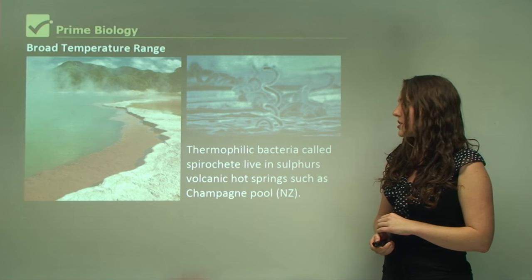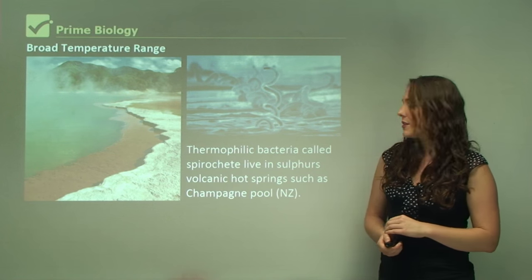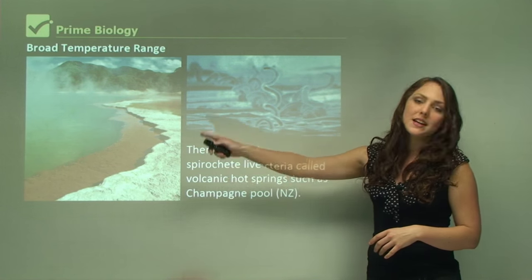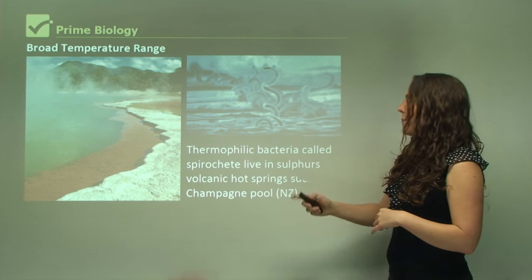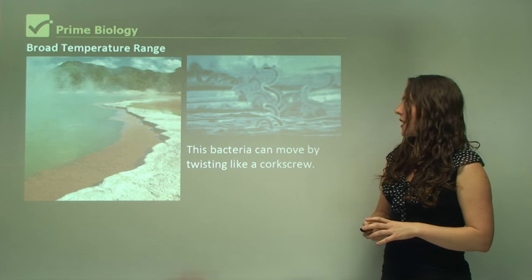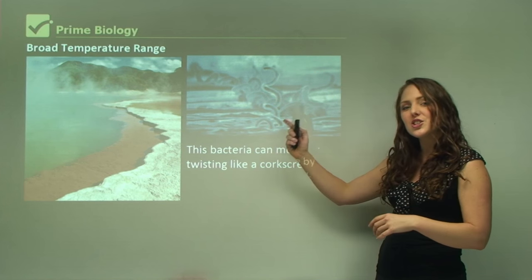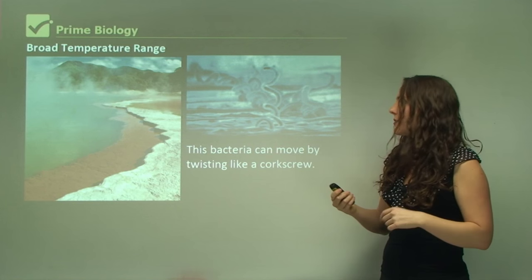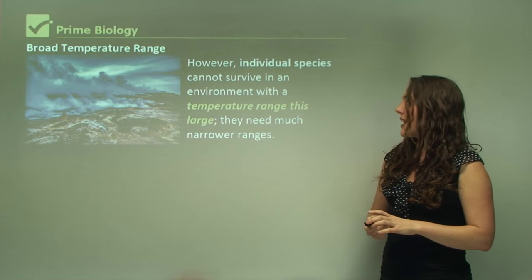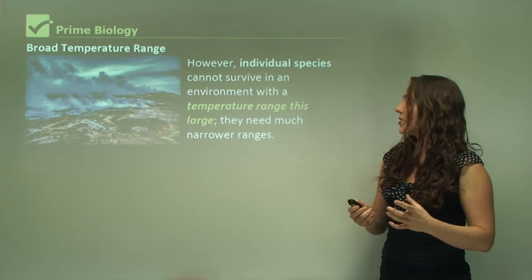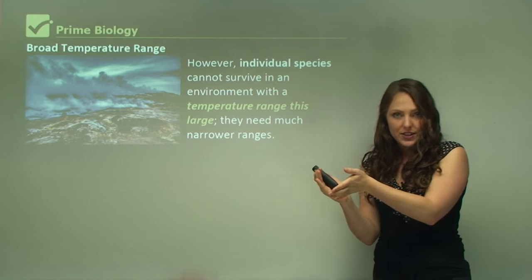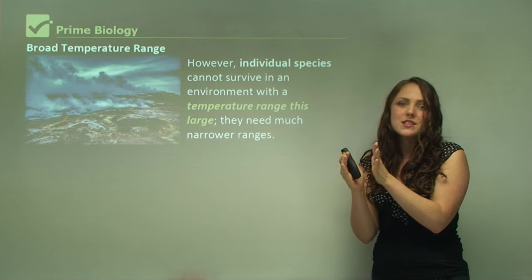Thermophilic bacteria called spirochetes live in saltwater volcanic hot springs such as the Champagne Pool in New Zealand. This bacteria can move by twisting like a corkscrew, and you can see in the image the spiral structure. However, individual species cannot survive an environment with a very large temperature range — they need much narrower ranges. Even though they survive at a hotter temperature, there is still a narrow range within which they can actually survive.